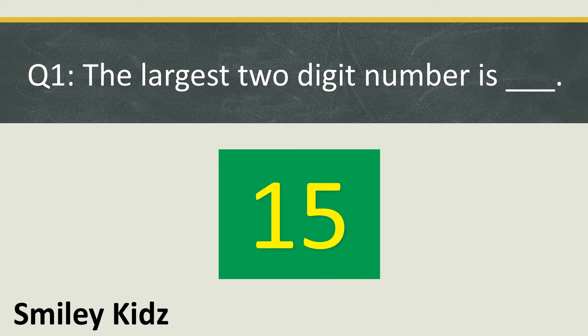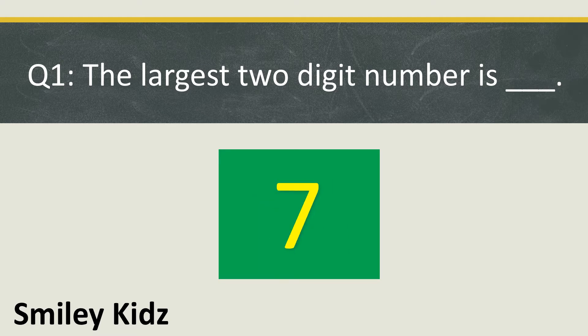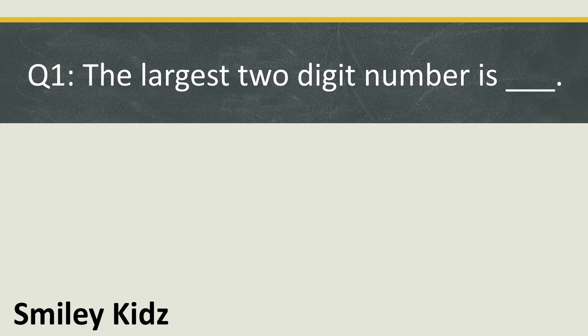Question number 1: The largest two-digit number is... Your time starts now. The right answer is 99. The largest two-digit number is 99.